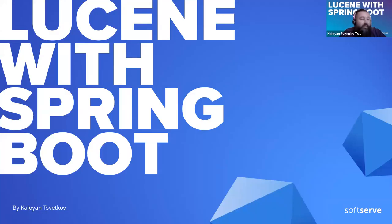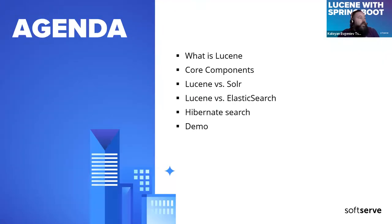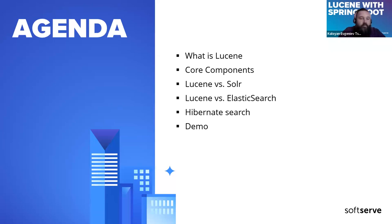Today I will cover only the fundamental things about Lucene and how we can use it with our Spring Boot application. There is a lot more that we can discuss — you can ping me any time after that. Today we're going to see what Lucene is, cover the core components, compare Lucene with technologies like Solr and Elasticsearch, and I will show you how to integrate it in our Spring Boot applications using Hibernate Search. During the session, I have prepared a demo and I will be switching between the presentation and my code.